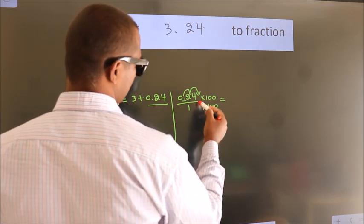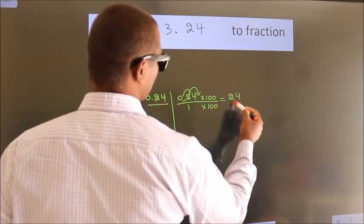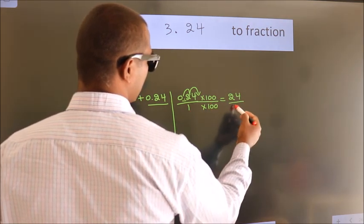Next, 0.24 times 100 is 24. 1 times 100 is 100.